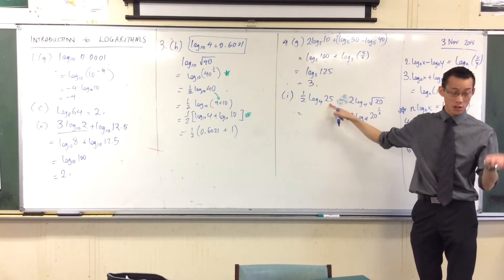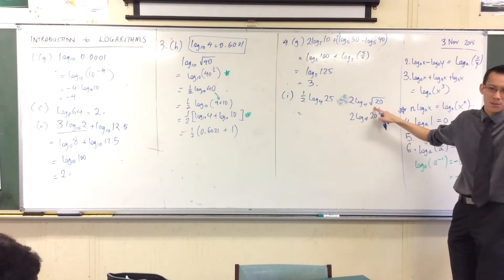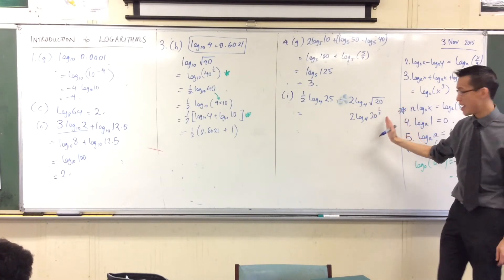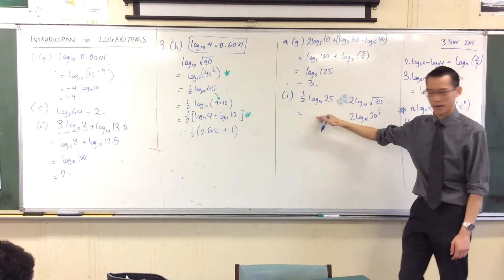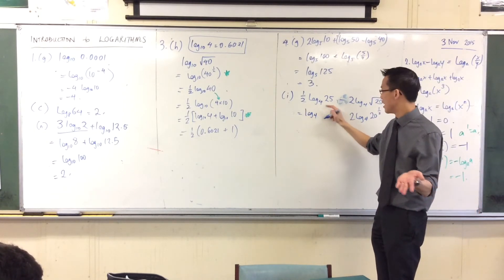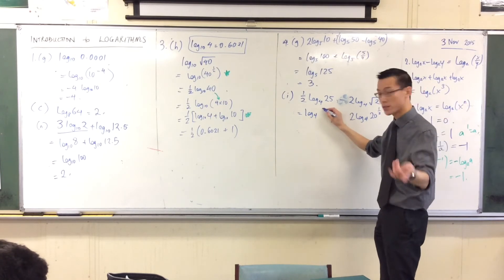Twenty-five is a square number, right? So taking the square root is easy. Whereas 20 is like, who knows what the square root of 20 is? No one knows what it is. So therefore, I want to get rid of the half there, but I want to put it in here. So this is going to turn into the log base four of twenty-five to the power of a half, which is the square root of twenty-five, which is five.